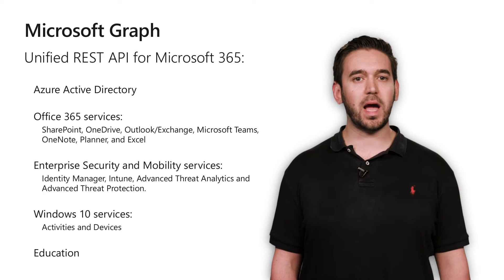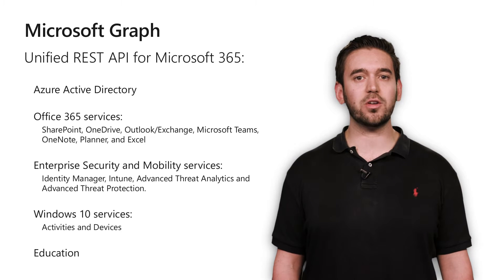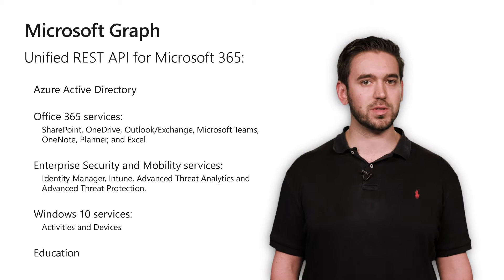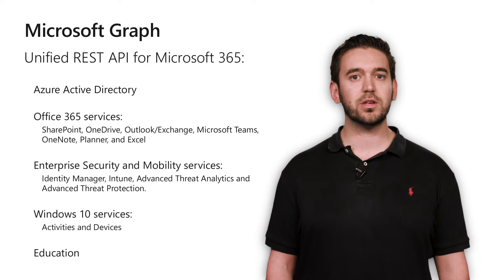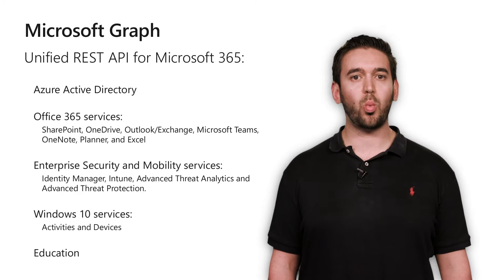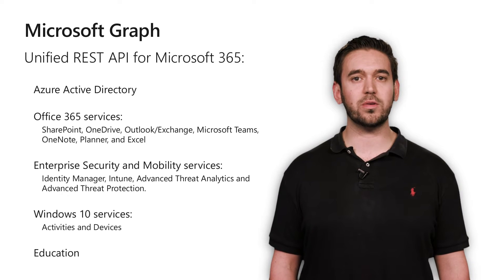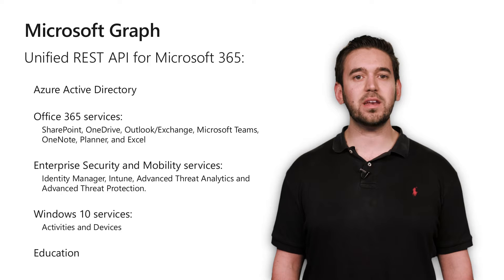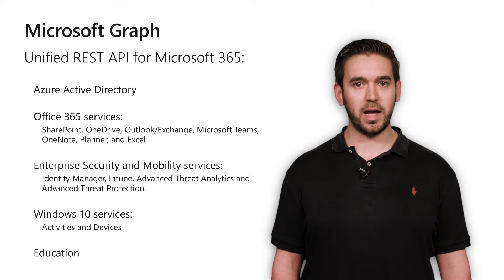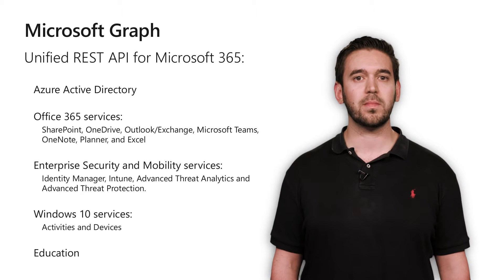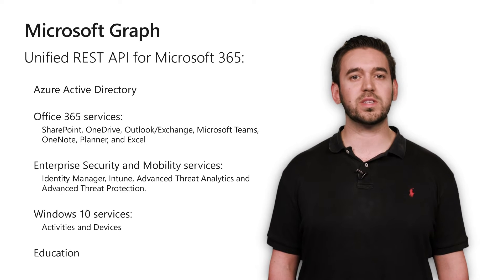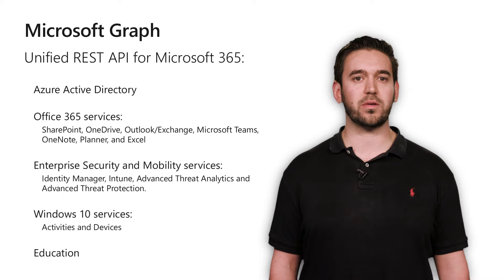It's a REST API that lets you build rich applications by integrating with services that are used by over 100 million active users. These services include Azure Active Directory, SharePoint, OneDrive, Outlook, Teams, Intune, Windows, and more. There are also some exciting new security APIs, and even APIs built specifically for the education space. All in all, there are over 8 trillion resources available in Microsoft Graph.